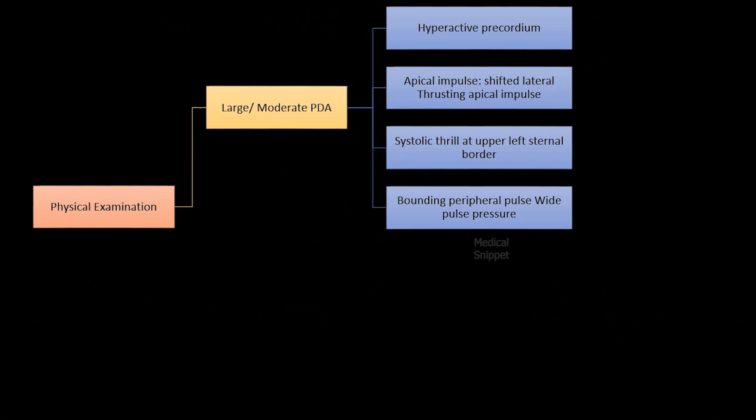This is due to wide pulse pressure. Wide pulse pressure is due to high systolic pressure, as left ventricular stroke volume is increased in PDA. It is also due to low diastolic pressure, as blood from aorta runs off into pulmonary artery via the PDA.